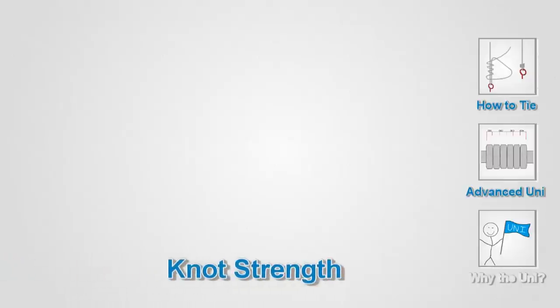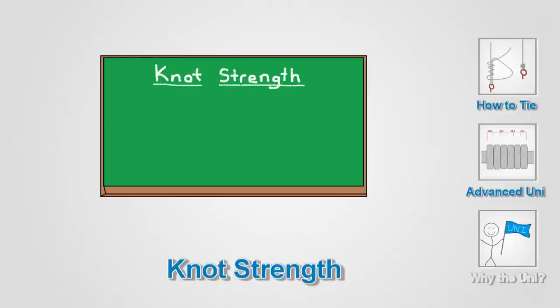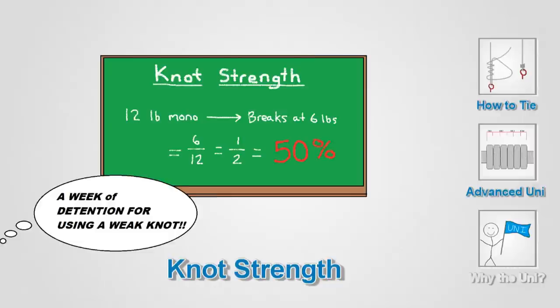The number one thing people will look to when talking about knots is the knot strength. Knot strength is measured as a percentage, the percentage of the strength of the line where the knot fails. So let's say you're using 12 pound mono, and your knot is failing at 6 pounds of pressure. The knot is testing at 50% knot strength.